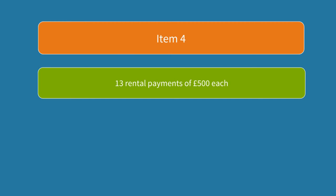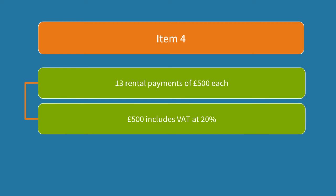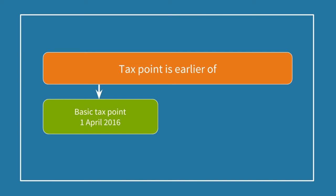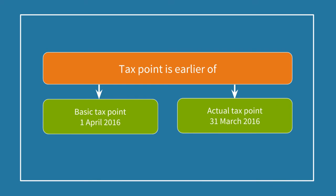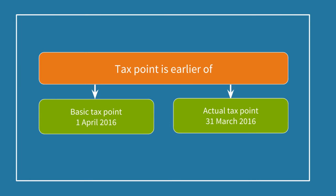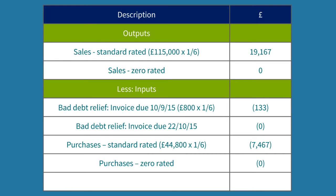Let's move on to point 4. We have 13 rental payments of £500 each. All expenses are standard rated so this £500 includes VAT at 20%. Although there are 12 months in a year, for VAT we need to consider the tax point. The basic tax point is the invoice date of 1st April 2016, but this is overridden if cash is paid before this date. As the cash was paid on 31st March 2016 we include all 13 rent payments. So 13 multiplied by £500 equals £6,500, and one sixth of that gives input VAT of £1,083.